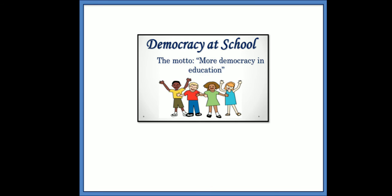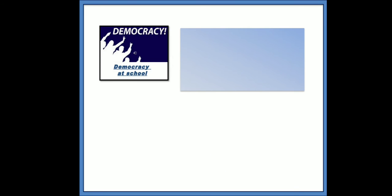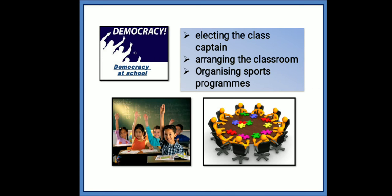This is a picture of democracy at school. At school, we take many decisions through democratic practice. For example: electing a class captain, arranging the classroom, and organizing sports programs. When we want to elect a class captain or arrange our classroom, we have to take everyone's opinion, one by one.